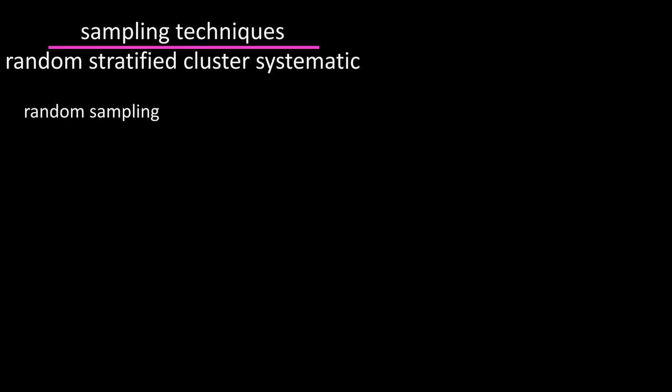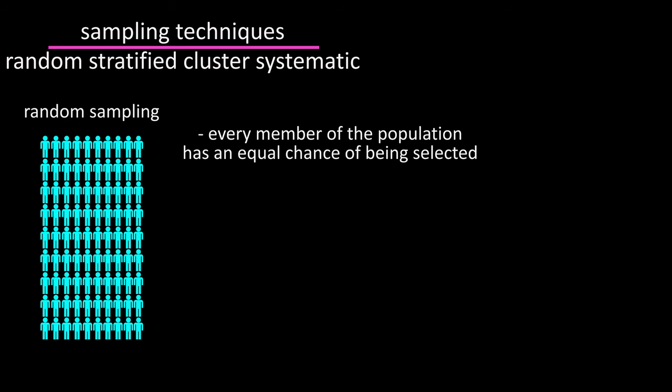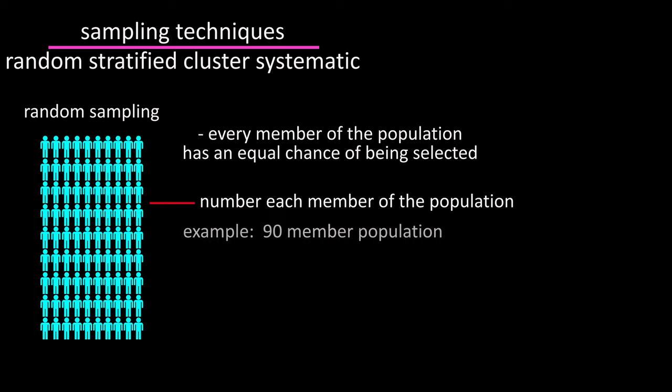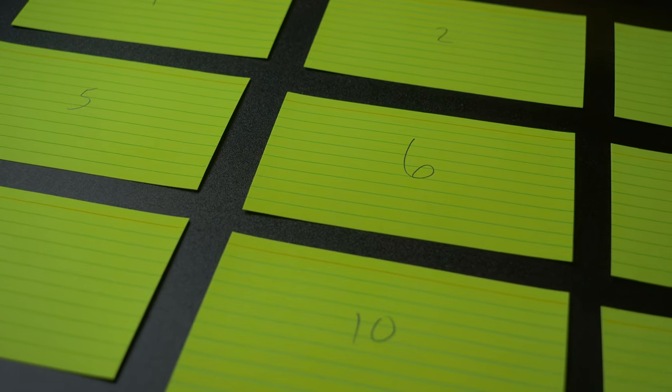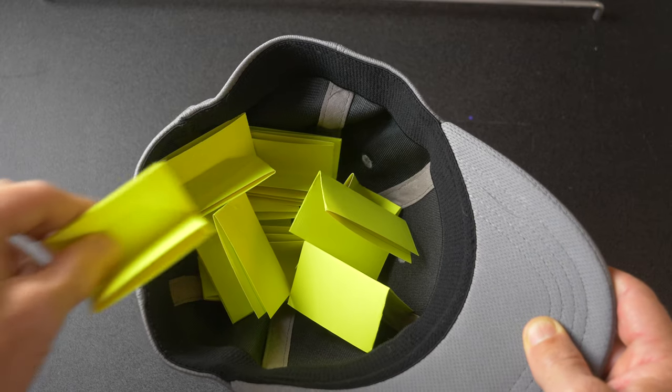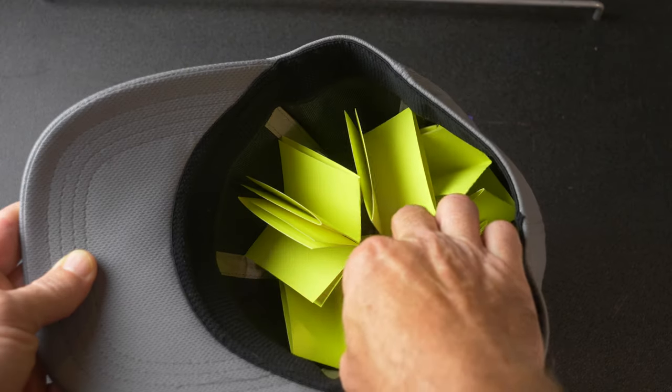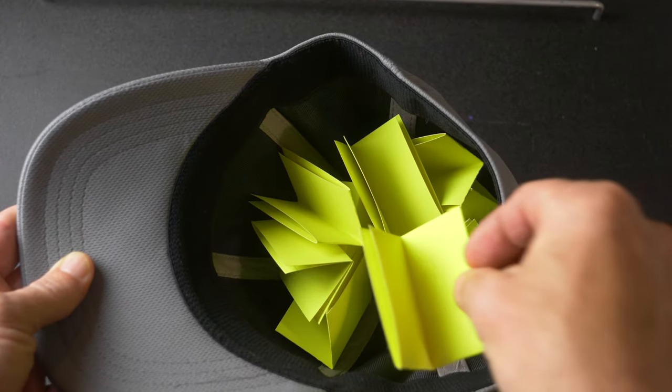A random sample is a sample where every member of the population has an equal chance of being selected. There are a few different ways to do this. The researcher could number each member of the population. To keep it simple, say a population of 90 members. He or she could then place numbered cards 1 through 90 in a hat or bowl or mixer and select as many cards as needed to complete the sample.